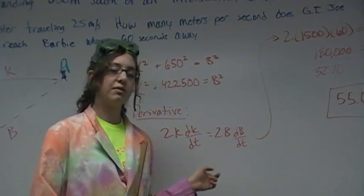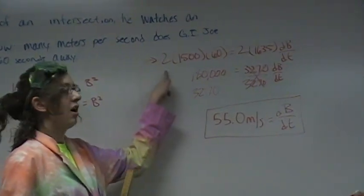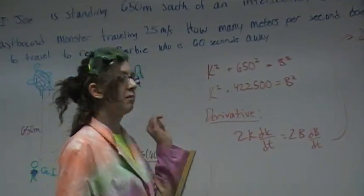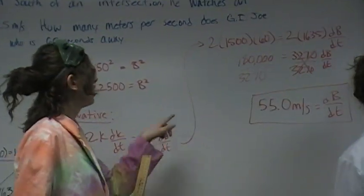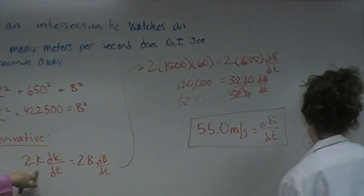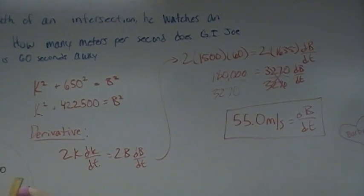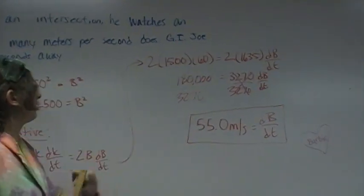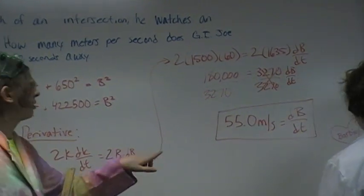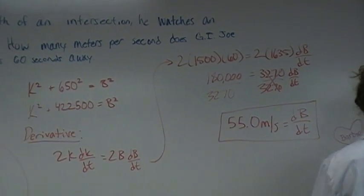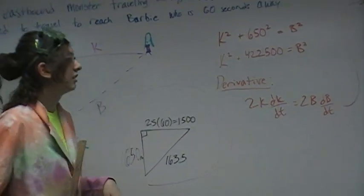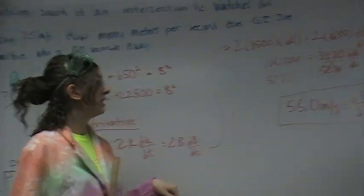Using our derivative equation, we then take some of our answers that we found in our diagram and plug them into the equation. So we have 2 times K, which we know is 1,500, times 60 seconds, which is equal to DK over DT, equals 2 times 1635, which is the distance of B, times DB over DT.